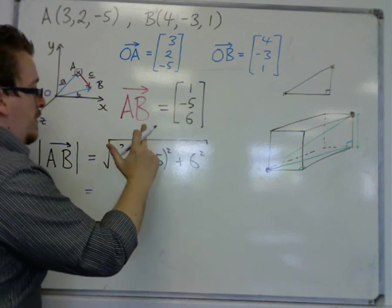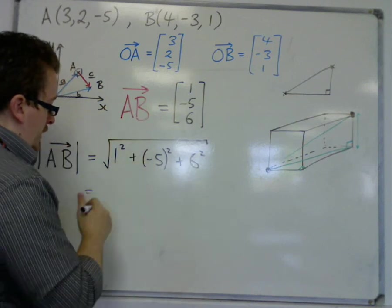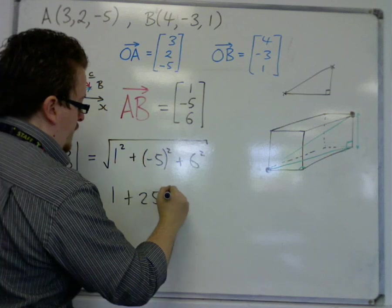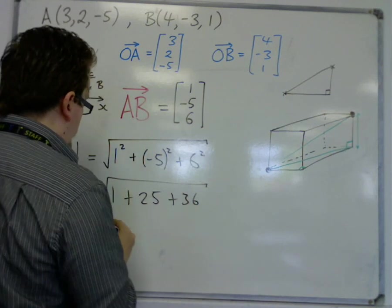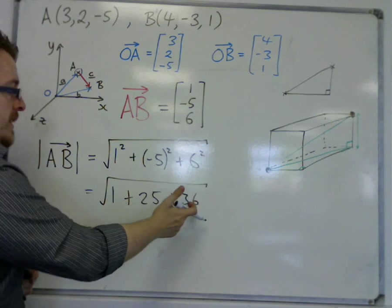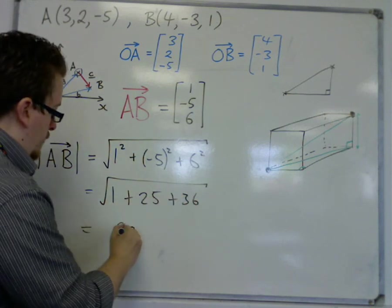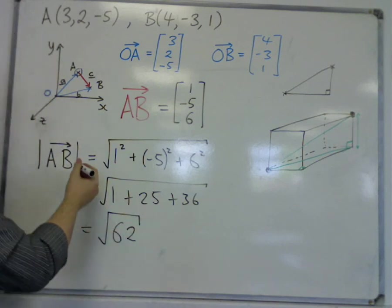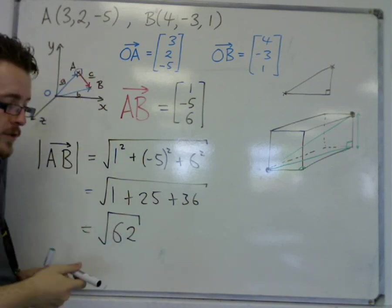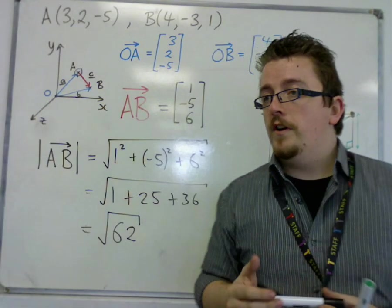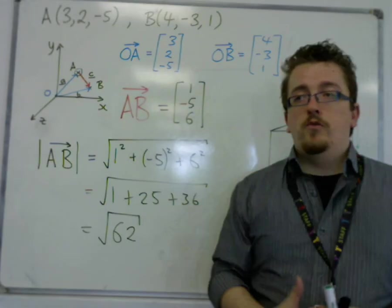So we've got 1 squared plus minus 5 squared plus 6 squared. So that's 1 plus 25 plus 36, square-rooted. So 36 and 25 is 61, so that's 62 square-rooted. And that is the length from point A to point B, so that's the distance in three dimensions.